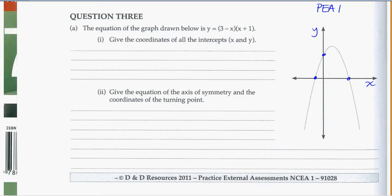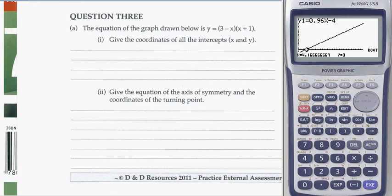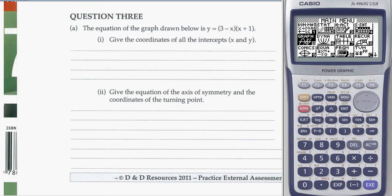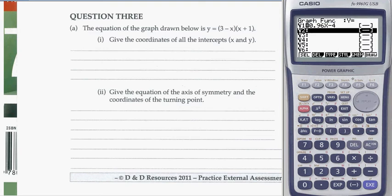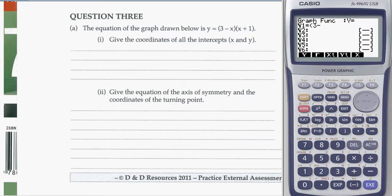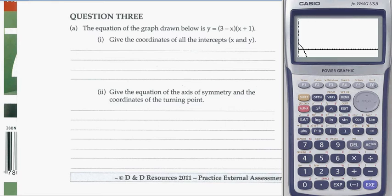We can use the calculator for this if you'd like. Go into menu and go to graph, number 5. Exit back to see where your equations are, and we can enter in the equation as we see it: bracket 3 minus x bracket, bracket x plus 1 bracket. Hit enter.